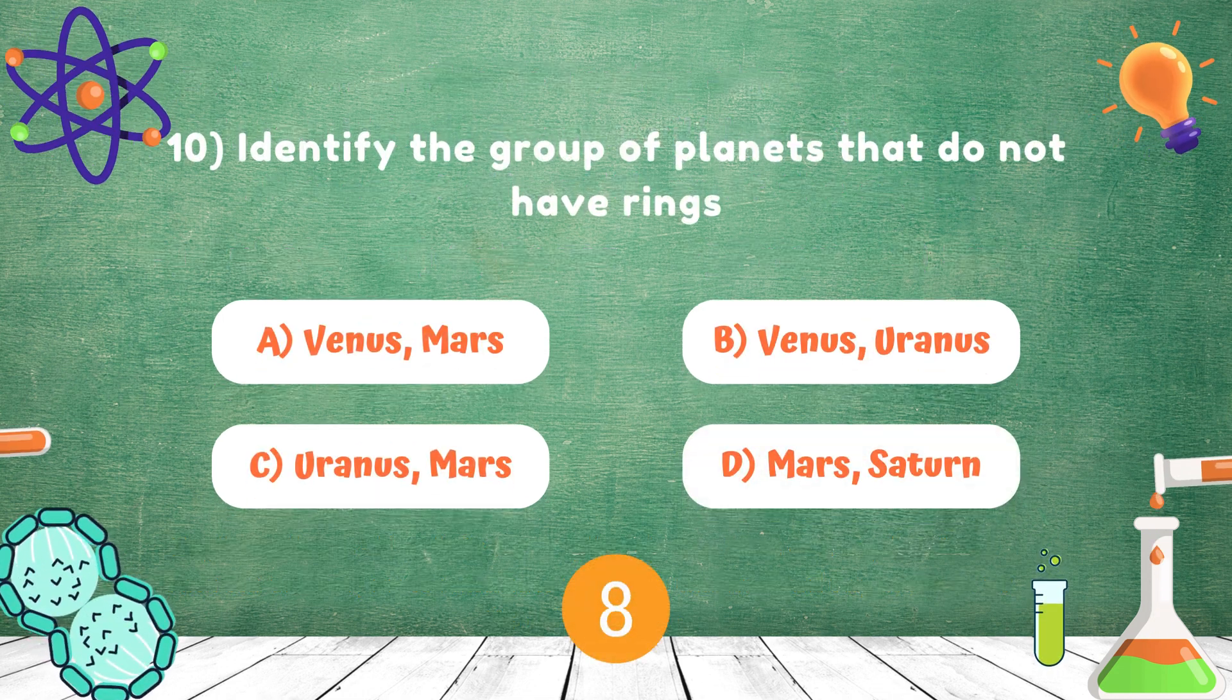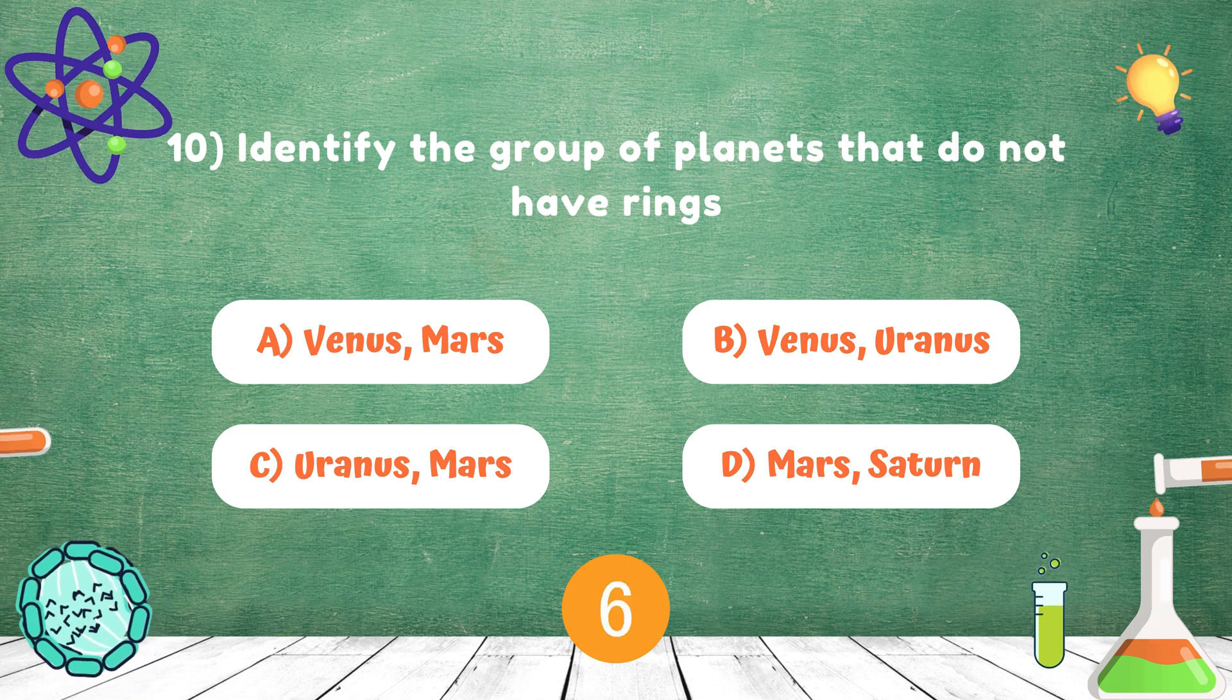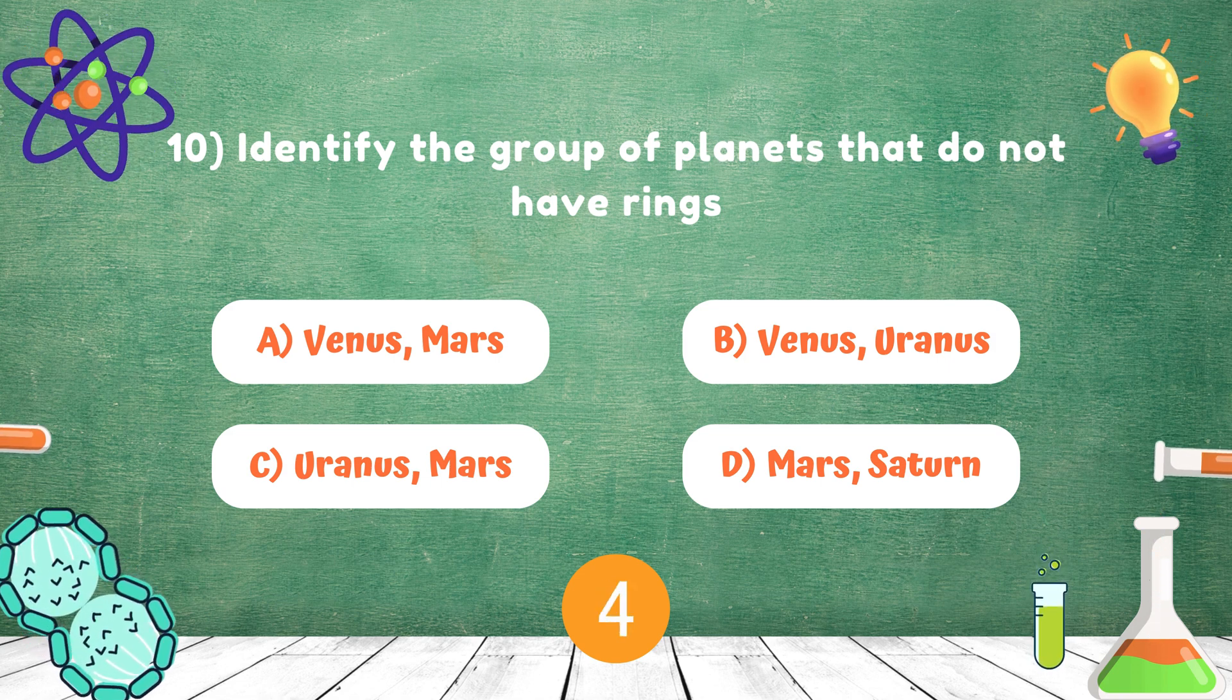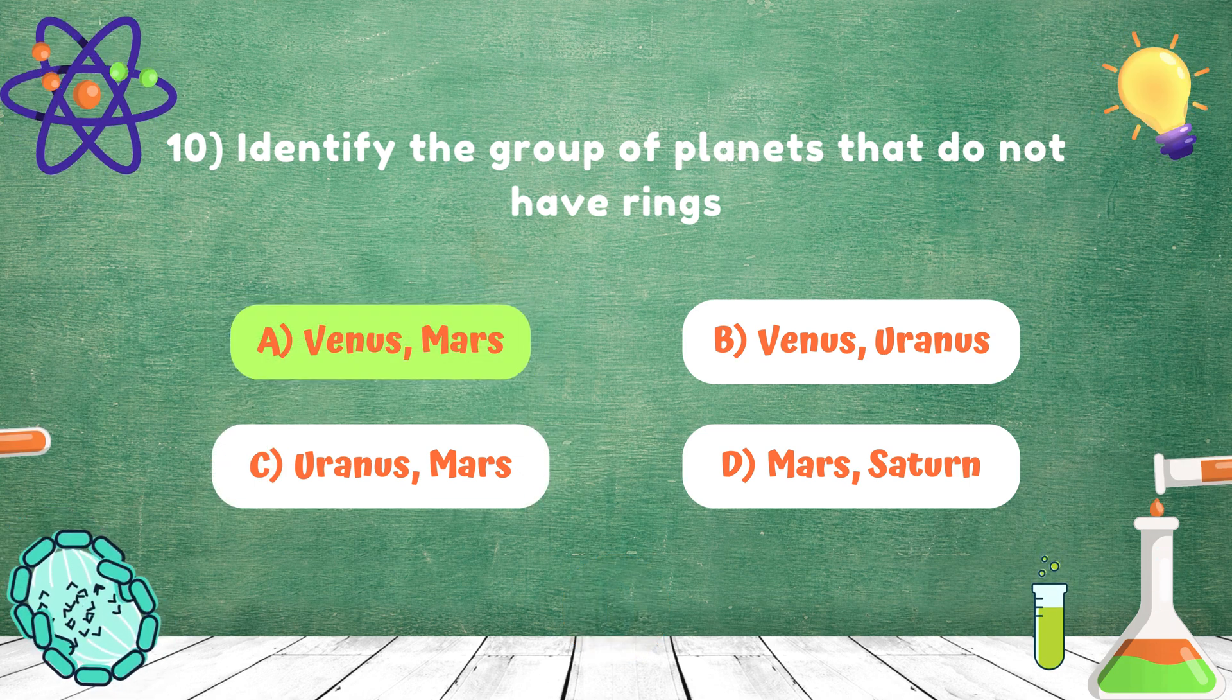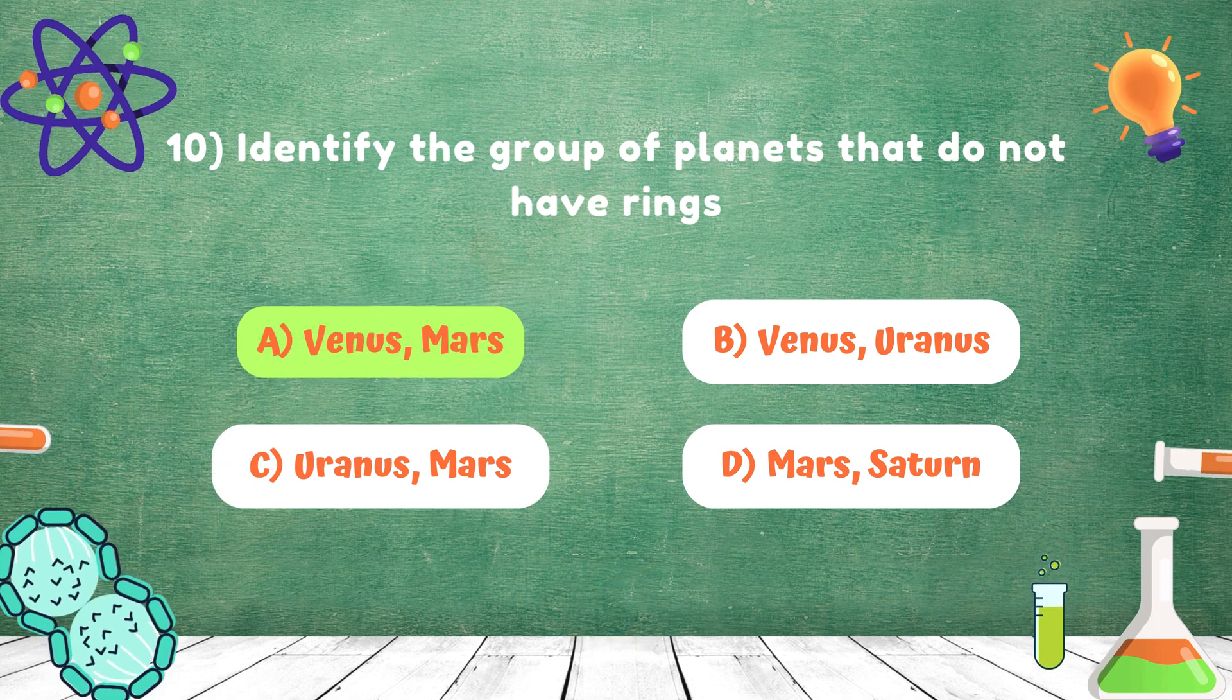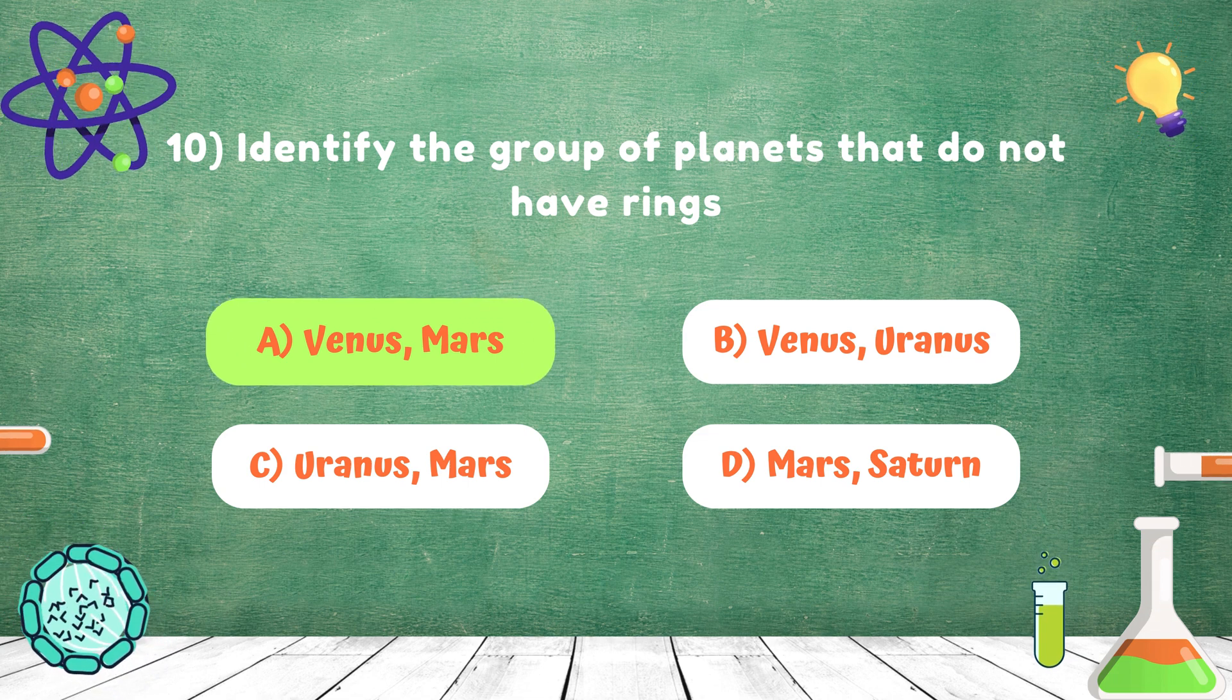Identify the group of planets that do not have rings. Answer is Venus and Mars.